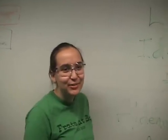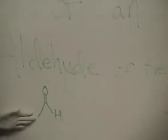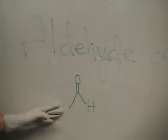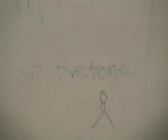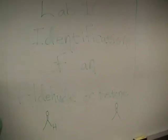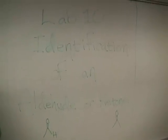Welcome to the lab video for lab 10, the identification of an aldehyde or a ketone. In this lab, you will be doing four tests: a solubility test, an iodoform test, a Jones test — which you've already completed last lab, so it will not be shown this time — and you will be making a DNP derivative as well.